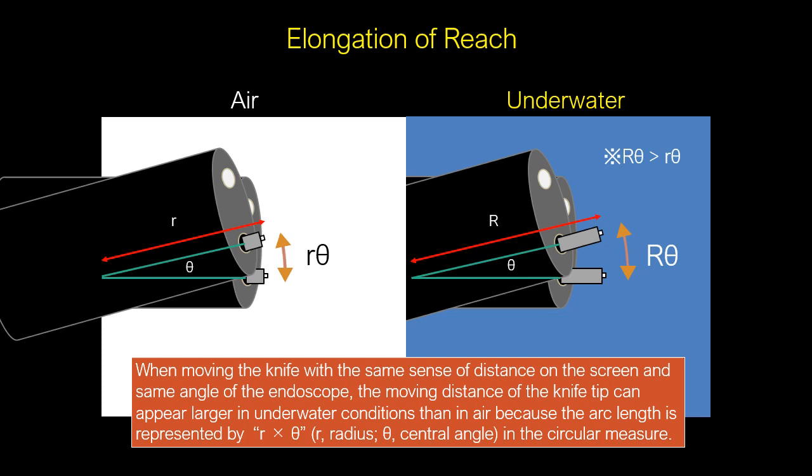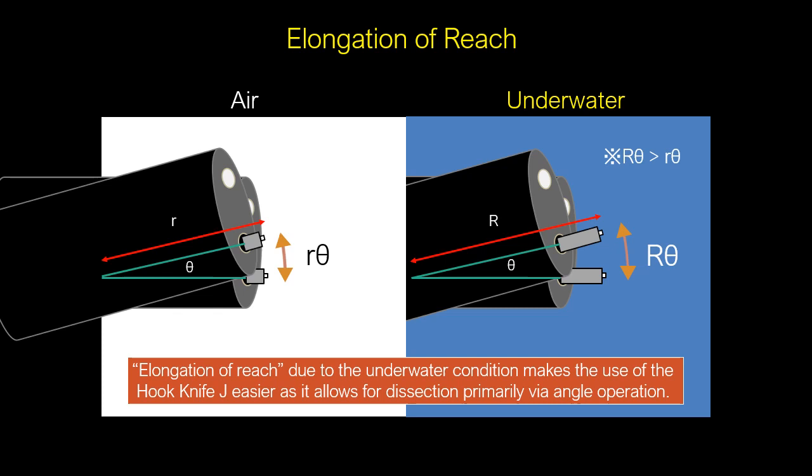When moving the knife with the same sense of distance on the screen and the same angle of the endoscope, the moving distance of the knife tip can appear larger in underwater conditions than in-air, because the arc length is represented by radius times the central angle in the circular measure. Elongation of reach due to the underwater condition makes the use of the hook knife-J easier, as it allows for dissection primarily via angle operation.